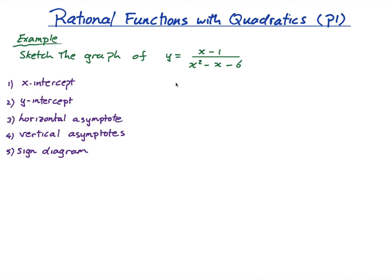The first thing I'm going to do is find the x-intercept. The x-intercept happens when y equals zero, so the numerator has to be zero. That leaves me with x minus one equals zero, so x equals one. The x-intercept is at x equals one.